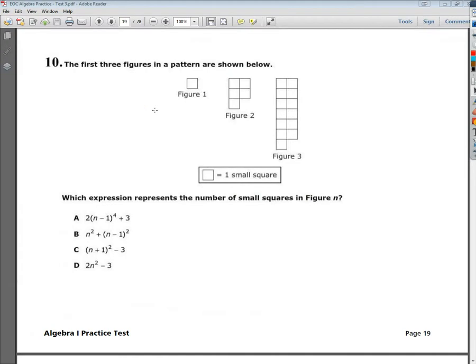Welcome, this is the Algebra 1 End of Course Practice Test, number 3, question number 10. The question says the first three figures in a pattern are shown below, and you can see the figures there. Which expression represents the number of small squares in figure n? Now when they say figure n here, they mean the generic form of the equation, so I can plug in any figure number I want and find out how many squares are in it.